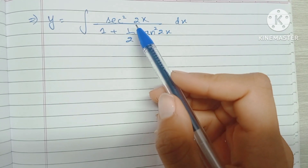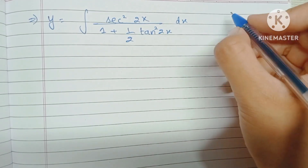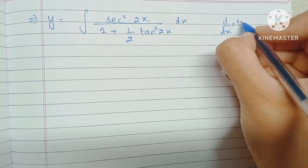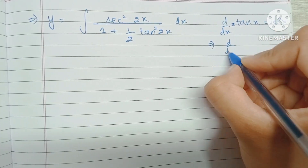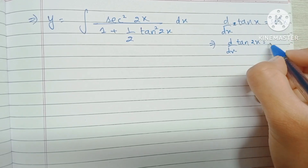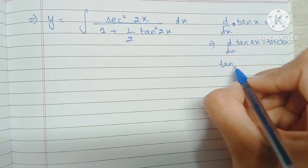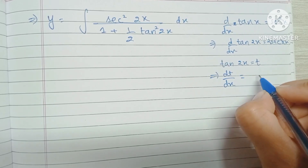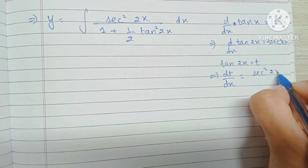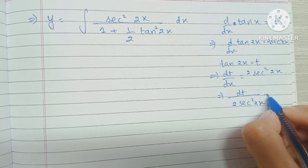So we are left with the integral of sec²2x upon 1 plus (1/2)tan²2x. Notice that the differentiation of tanx is sec²x, which means the differentiation of tan2x will be sec²2x times 2, because we multiply by the coefficient of x. So I am going to substitute tan2x equal to t, which implies dt/dx equals sec²2x times 2.